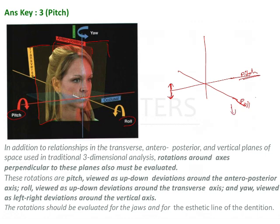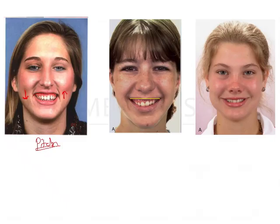Roll appears as up and down movement along the sides. In this clinical image, the right side of the patient appears to have rotated downwards while the left side has rotated upwards. This is how roll appears — a rotational tendency that is up and down movement along the transverse plane.